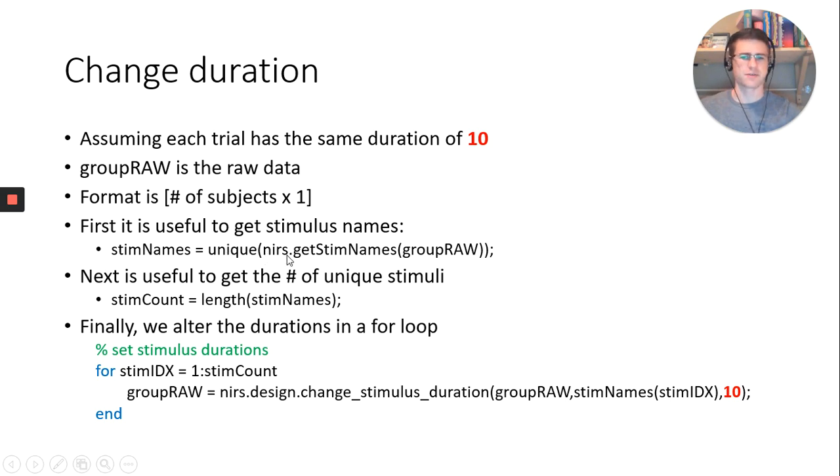I'm going to go in my NIRS folder. There's a function called getStimNames, and I'm going to call it on my raw variable. I use the MATLAB function unique, which will ignore duplicate values, so it gives me only the individual stimulus names I have. I output it as StimNames. Next, you're going to want to figure out how many different types of stimuli you have. So all you have to do is get the length of StimNames and save it as StimCount.